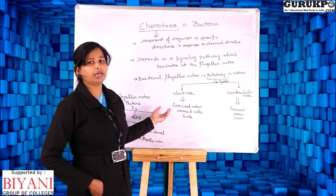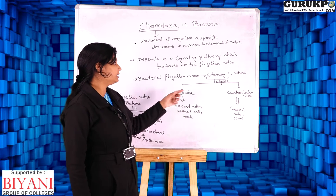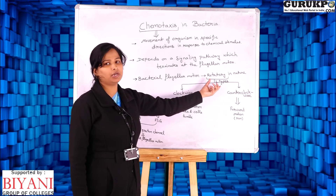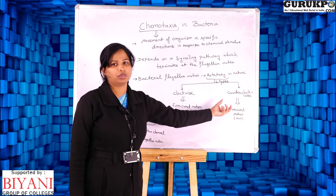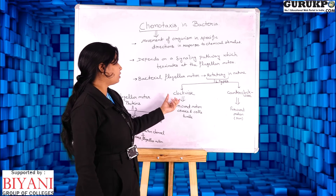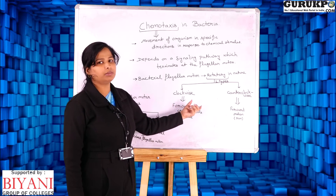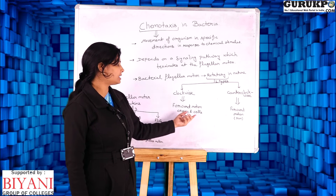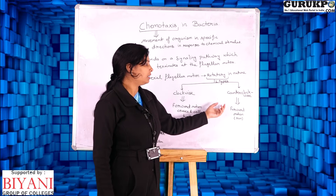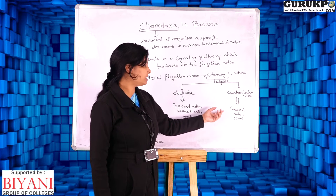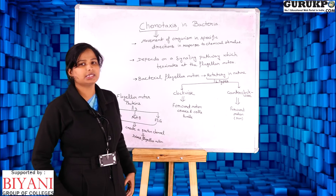The flagella in bacteria move in a rotatory fashion, and this rotatory motion may be of two types: clockwise rotation or counterclockwise rotation. In clockwise rotation, the bacterial cell's forward motion ceases and the cell tumbles. While in counterclockwise rotation, the bacterial cell moves in a forward motion — it means it runs.